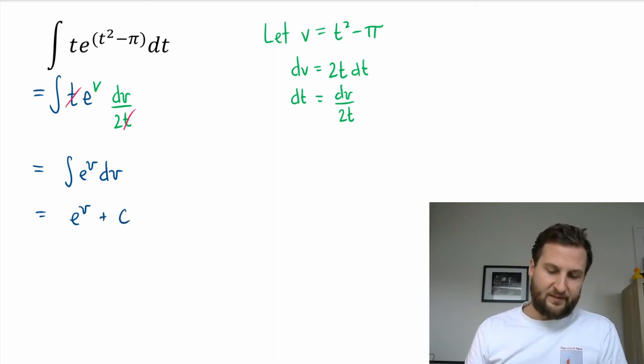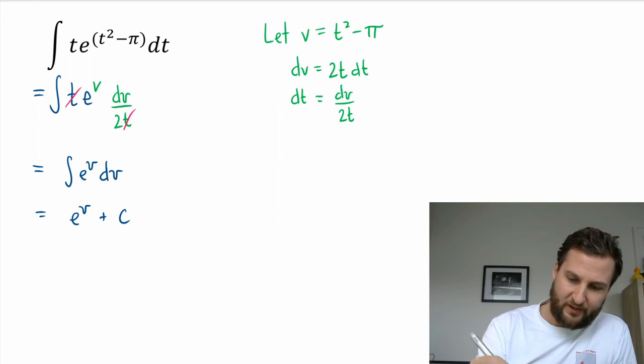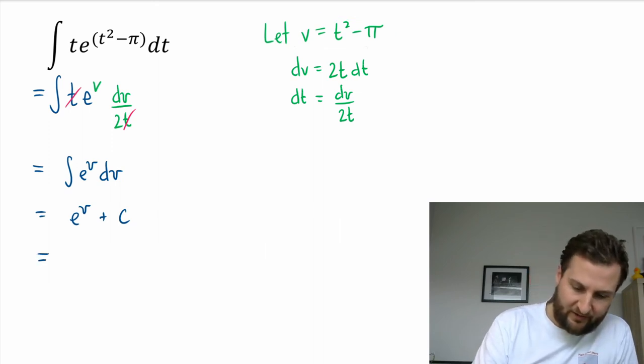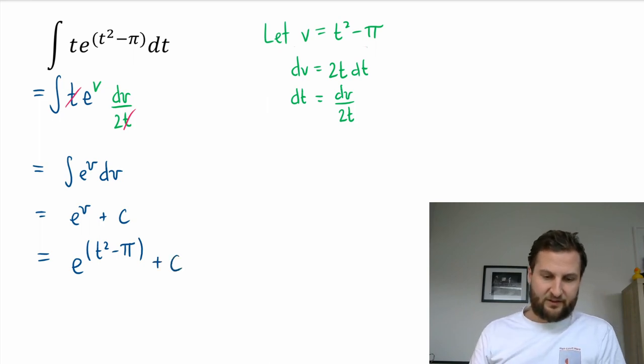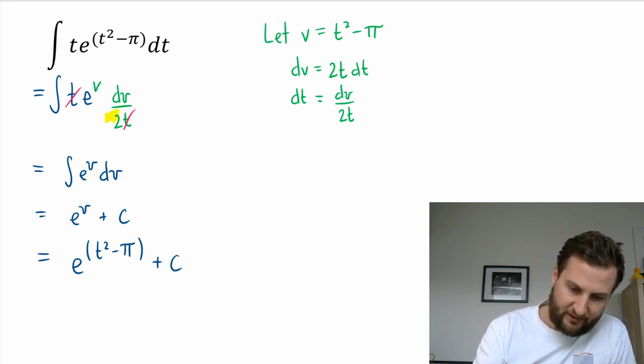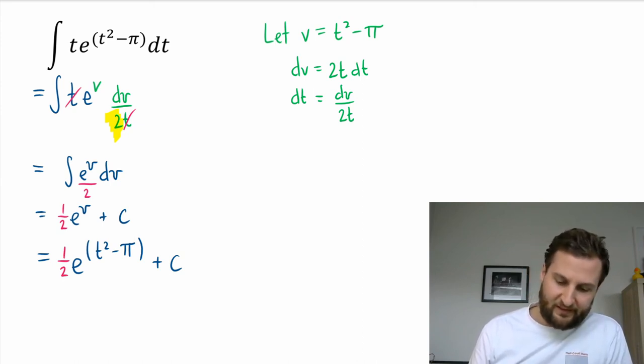This integral is itself plus C. One last step here: let's go back and sub in for v equals t² minus π. I'm going to have this integral is e to the t² minus π plus C. It looks an awful lot like the original one. I might have left out a 2 here. I did; I left out a 2. This 2 right here, let's go back and add in this 2, so it's actually e to the v over 2. That doesn't really change much; I'll just have a 1/2 out front or a divide by 2.